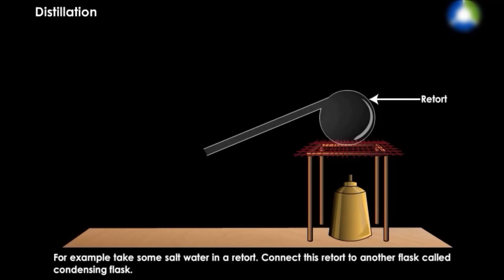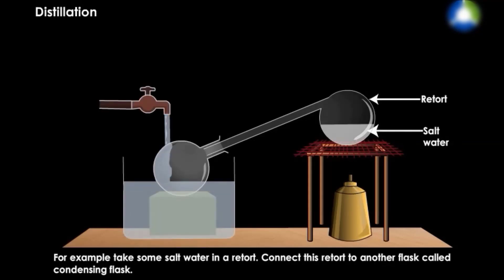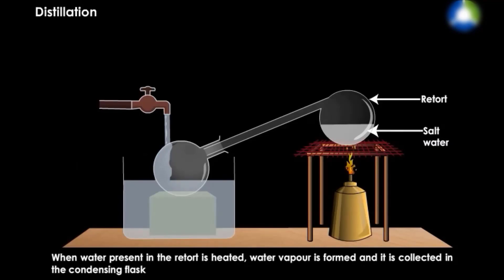A retort is a glass vessel with a round long neck bent downwards that is used in laboratory for distilling water. Connect this retort to another flask which is called condensing flask. When water present in the retort is heated, water vapor is formed and it is collected in the condensing flask.